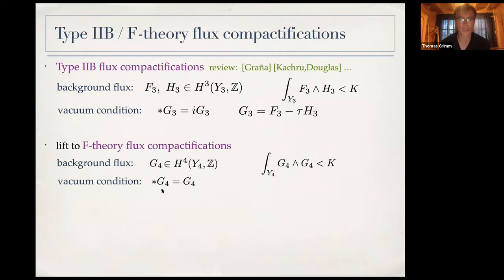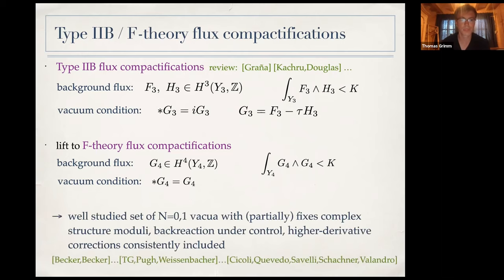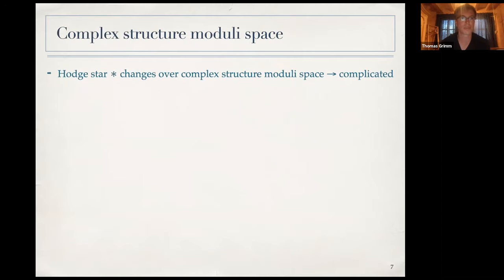The vacua are defined by the Hodge star acting on G4 being equal to G4 — self-dual forms which are quantized. These vacua are very well-studied. They are N=0 and N=1 vacua, partially fix the complex structure moduli, with back-reaction under control and higher-derivative corrections understood. It's fair to say that if we want to test any conjecture, this is probably the best setting to start with.